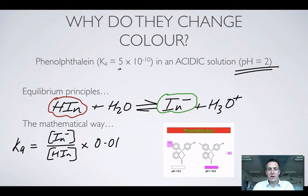So in other words 5 × 10⁻¹⁰ divided by 0.01 is equal to the ratio of In- to HIn, and we can see hopefully that this here is a very very small number, 5 × 10⁻⁸. So the amount of In- compared to the amount of HIn is tiny, and that's why there's lots of the colorless form and not much of the purple.